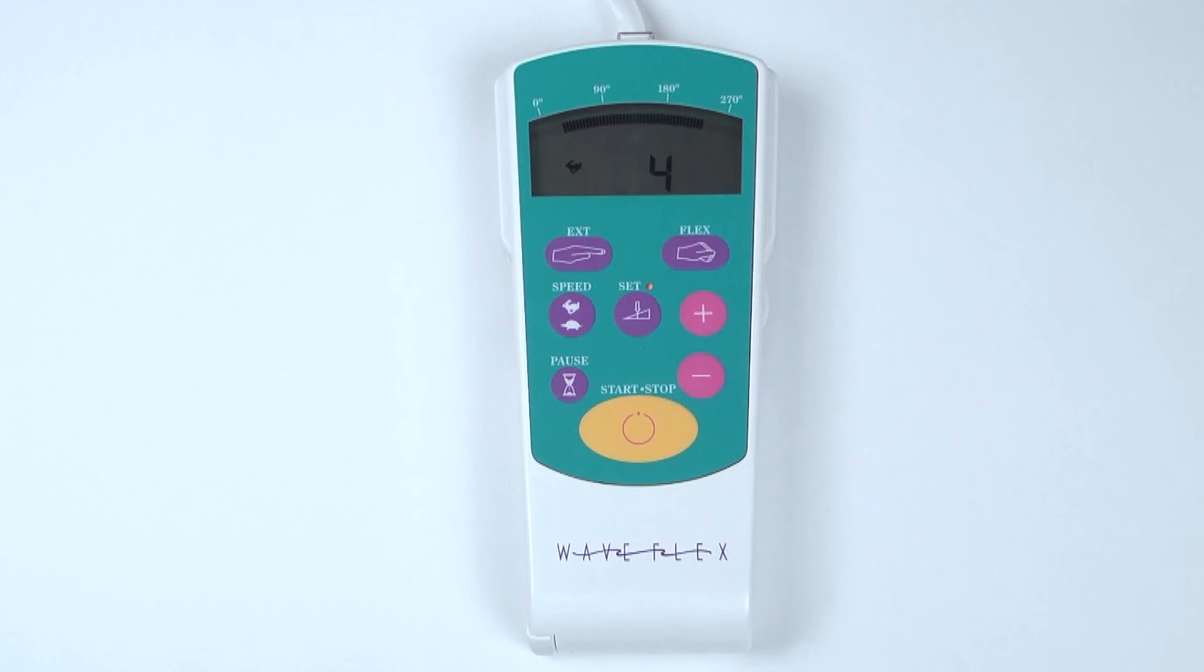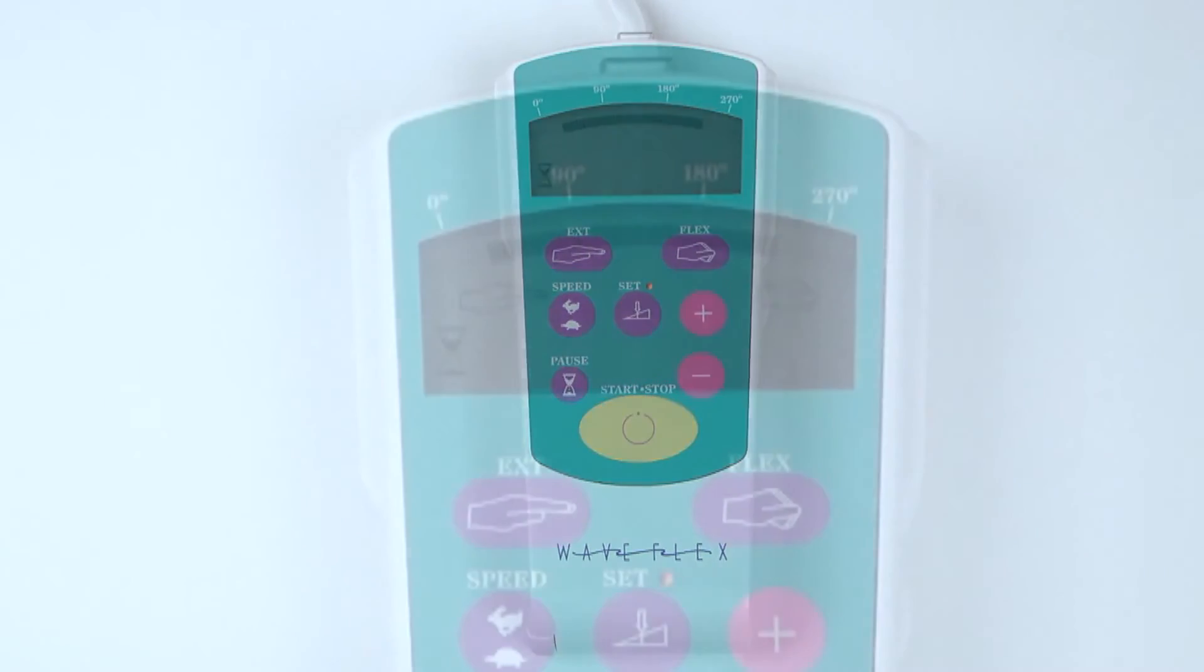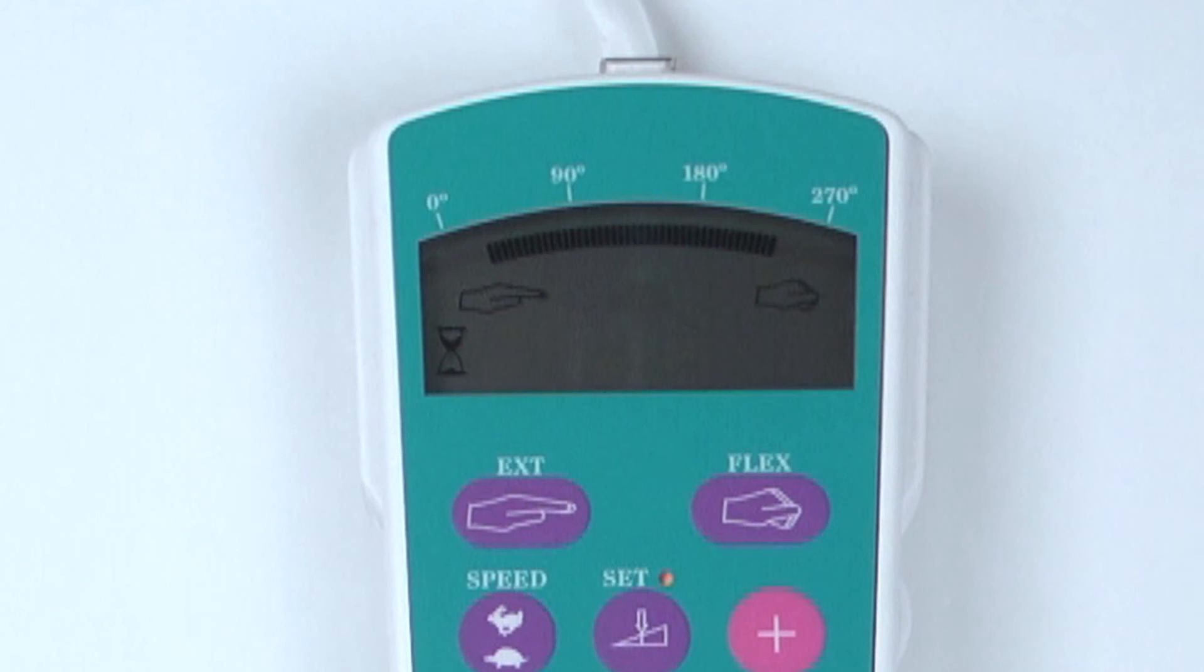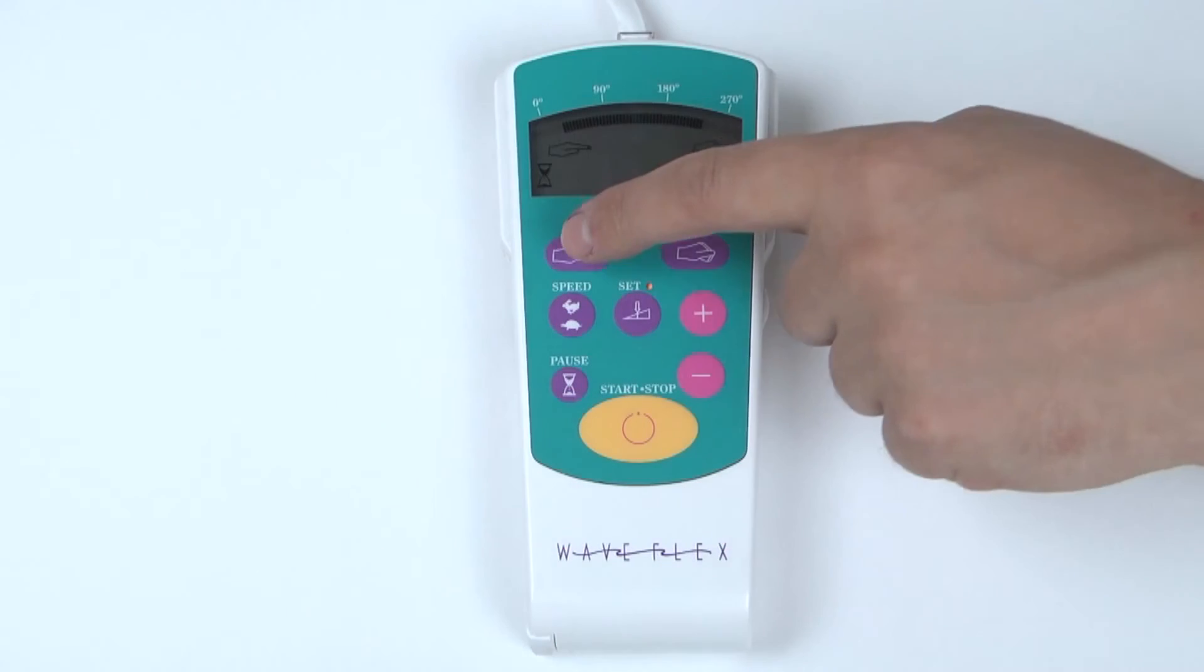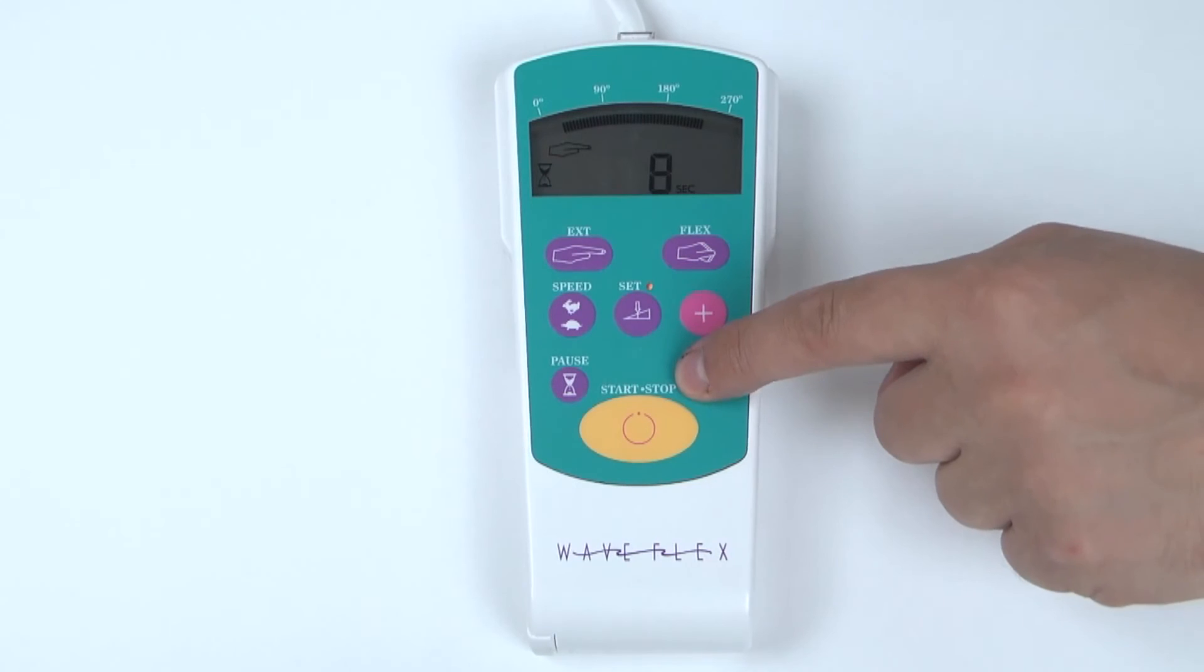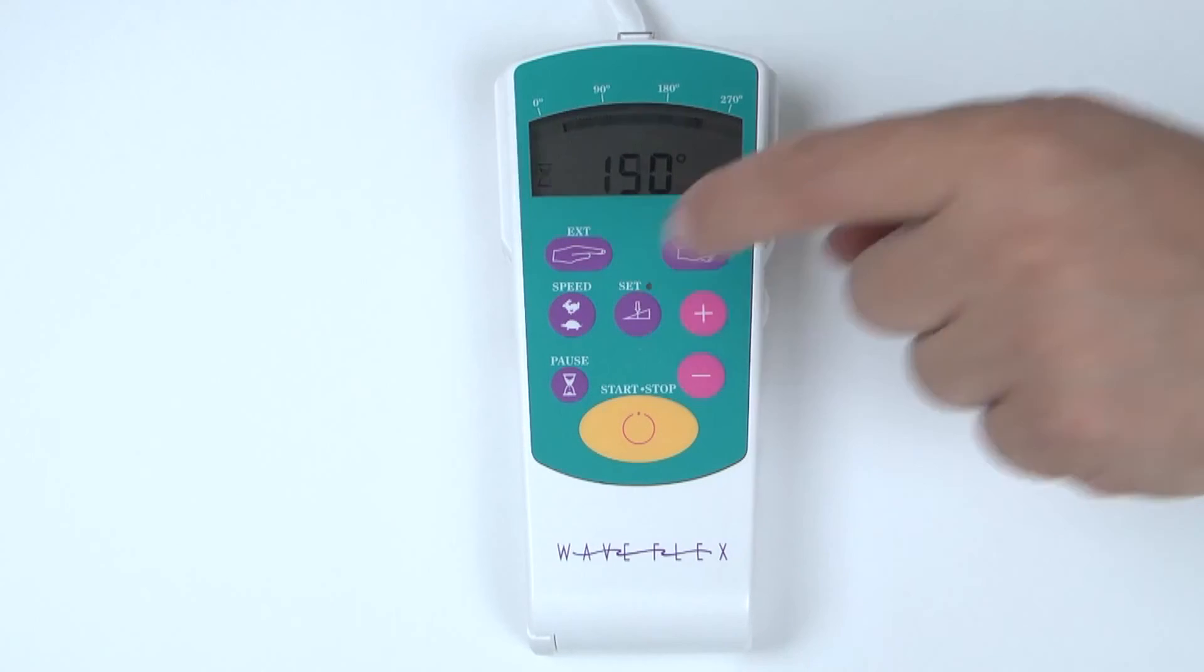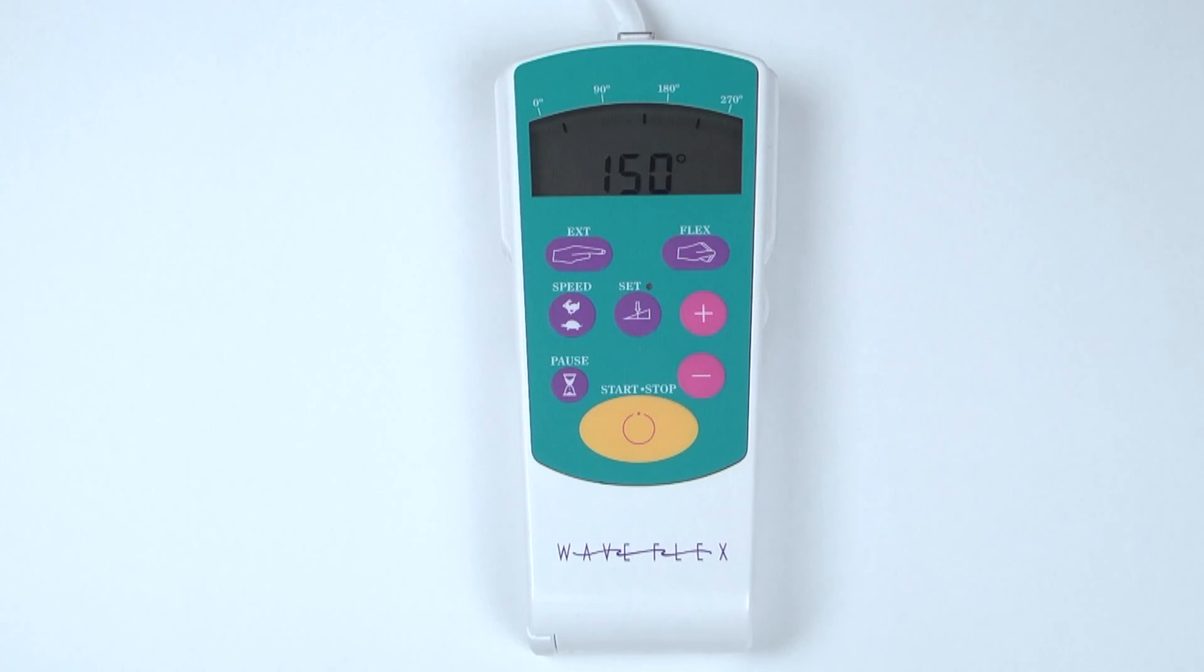To program pause while still in the set mode, press the pause button. The LCD screen will now display the pause hourglass icon and the extension hand flex icons. Choose one or both extension and flexion. Then, increase or decrease pause with the plus or minus buttons. When programming is complete, press the Set button again to store the settings in the controller's memory.